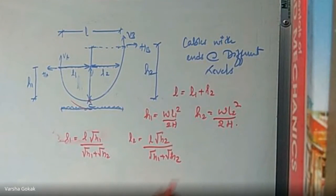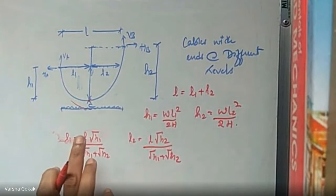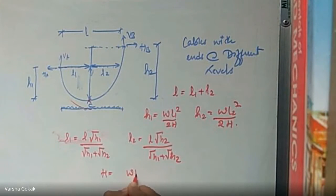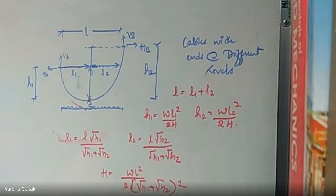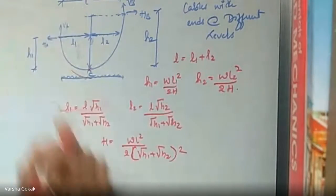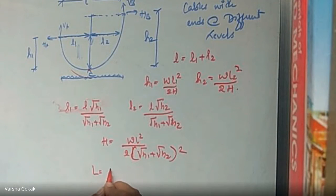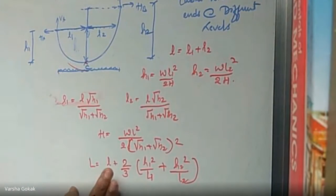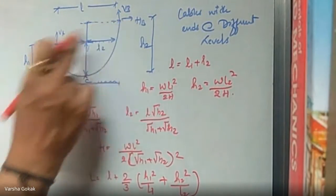After this, we calculate VA and VB by taking moments at A, B, or point C to find the reactions VA and VB. After that, we find H, the horizontal thrust, which is given by WL squared divided by 2 times the quantity root H1 plus root H2, all squared. The length of the cable, capital L, is given by small l plus two-thirds of H1 squared by L1 plus H2 squared by L2.